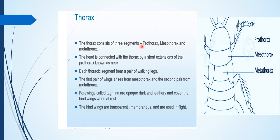Thorax is divided into three parts: prothorax, mesothorax, and metathorax. The prothorax is connected to the head by a short neck, and each thoracic segment bears walking legs. The mesothorax carries the first pair of wings and the metathorax carries the second pair of wings. The front wings are called tegmina — they are dark, opaque, and leathery. The hind wings are transparent and membranous and are used for short flights.